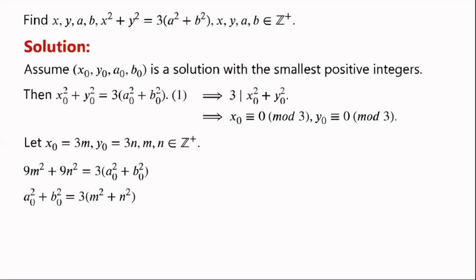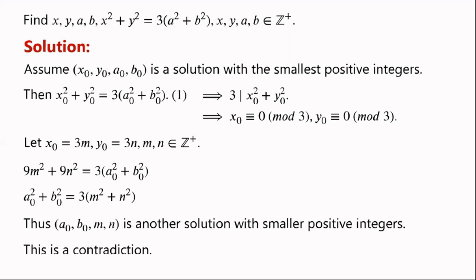Thus (a0, b0, m, n) is another solution with smaller positive integers. This is a contradiction, hence the equation has no solutions.